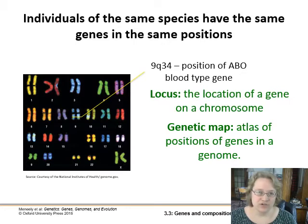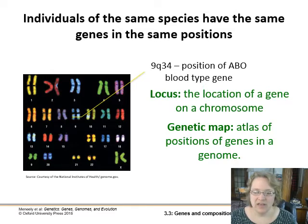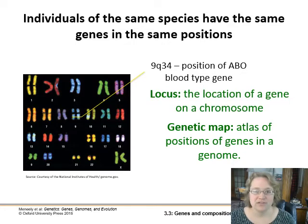A lot of the older genetic maps show genes in relation to one another — how far away they are from each other — and newer maps can literally say how many base pairs down from the end of the chromosome a gene is.